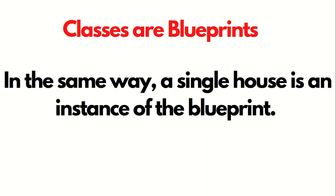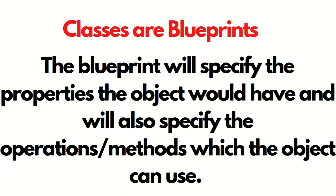In the same way, a single house is an instance of a blueprint. So we can say classes are blueprints. The blueprint will specify the properties an object would have, and also specify the operations or the methods which the object can use.